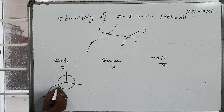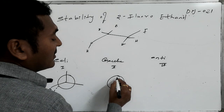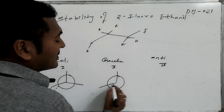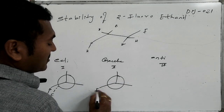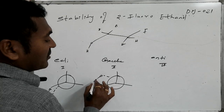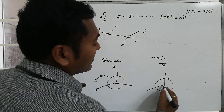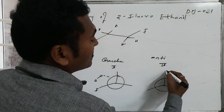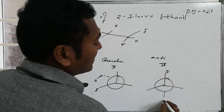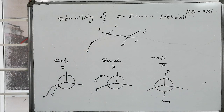In the eclipsed conformation, OH is present here and fluorine is present here, with the remaining being hydrogens. In the gauche conformation, this will be fluorine and here will be OH, remaining are hydrogens. In the anti-conformation, this is fluorine and this will be OH, with the remaining hydrogens present.